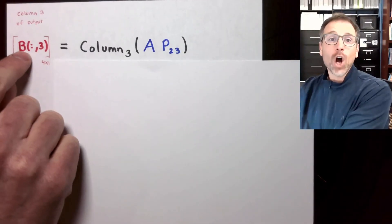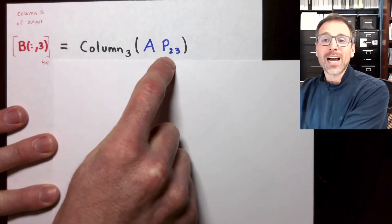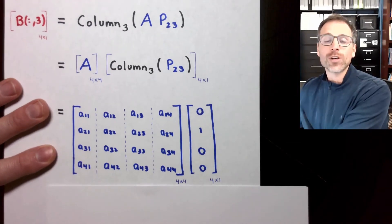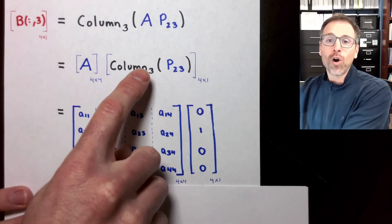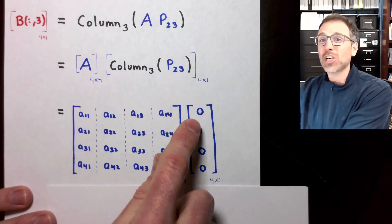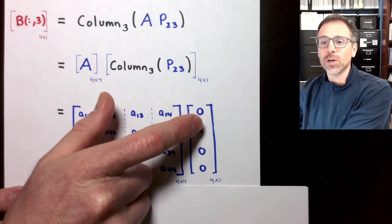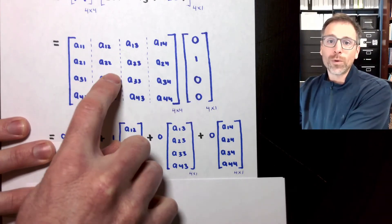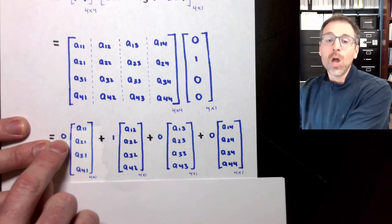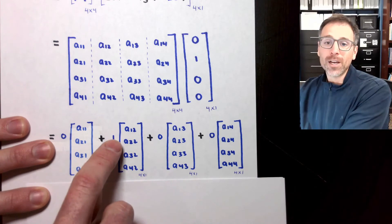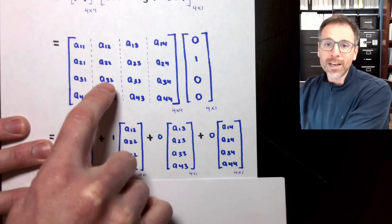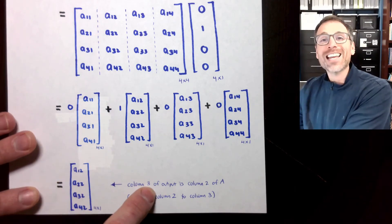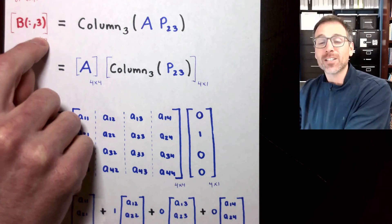Now we're going to get column three of the output — column three of A times P₂₃, which is A times column three of our transposition matrix. Column three of P₂₃ is column two of the four by four identity matrix, which is [0, 1, 0, 0]. Doing that linear combination, we pair zero with the first column, one with the second column, zero with the third column, zero with the fourth. All the zeros disappear, and we pick off one times the second column. So the third column of our output is the second column of A — that's the swap accomplished.